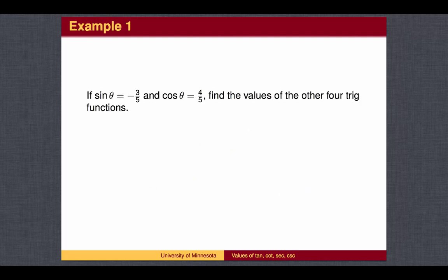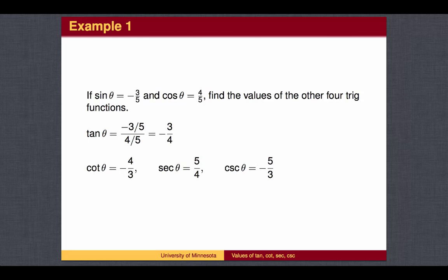For example, if the sine of theta is negative 3 fifths and the cosine of theta is 4 fifths, find the values of the other four trig functions. This is done simply by using the definitions. The tangent value is the sine value divided by the cosine value. The cotangent value is the reciprocal of the tangent value. The secant value is the reciprocal of the cosine value. And the cosecant value is the reciprocal of the sine value.